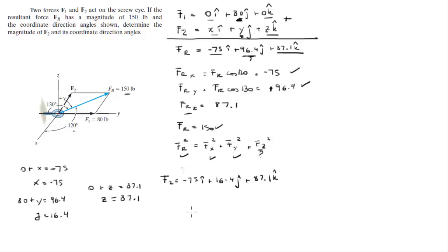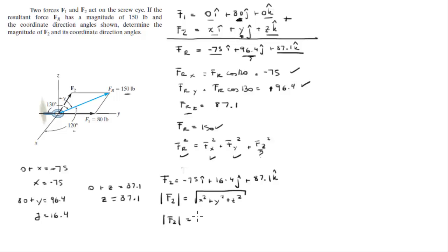Now that we have these component values we can find the magnitude of F2 by doing the square root of the X component squared plus the Y component squared plus the Z component squared, and this gives us that F2 is equal to 116.1.